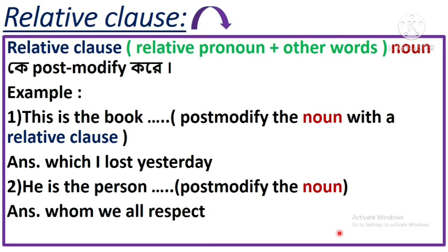A relative clause — relative pronoun plus other words — post-modifies a noun. For example: 'This is the book which I lost yesterday' — 'which I lost yesterday' is a relative clause modifying 'book.' 'He is the person whom we all respect' — 'whom we all respect' is a relative clause. 'The pen which I lost yesterday was expensive' — 'which I lost yesterday' is a relative clause modifying 'pen.'